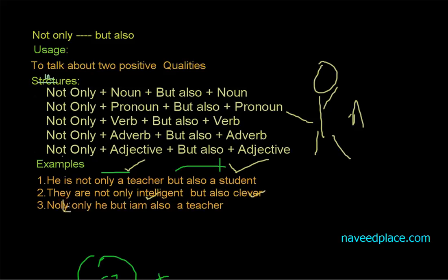Here we are saying that not only he, but I am also a teacher. So here we are saying that okay, he is a teacher, but also I am also a teacher. Here we are talking about two positive qualities.